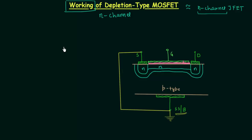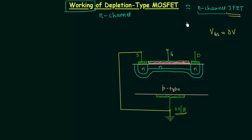In case of enhancement type MOSFET, the channel is not there from the beginning. To enhance the channel, we make the gate terminal more positive with respect to the substrate terminal by applying voltage VGS. But in case of depletion type MOSFET, the channel is there from the beginning, so there is no need to enhance it. We can start with VGS equal to 0V, just as we did with the junction field effect transistor. Both JFET and depletion type MOSFET work perfectly when VGS equals 0V.